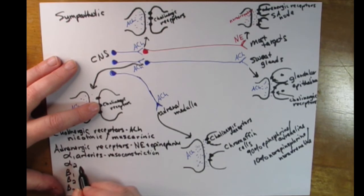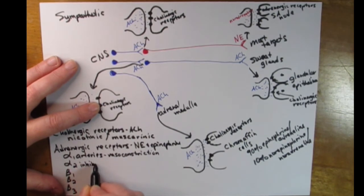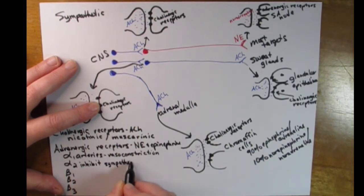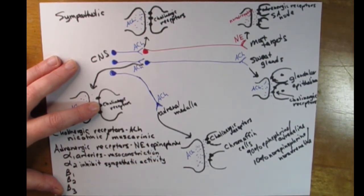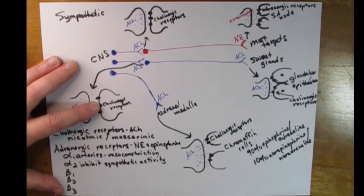Alpha-2 adrenergic receptors do the opposite: they inhibit sympathetic activity in general. Specifically, they decrease vasomotor tone and therefore decrease blood pressure. There are classes of drugs that are agonists for the alpha-2 adrenergic receptors — an agonist mimics the binding of a neurotransmitter to that receptor — and this class of drugs will decrease blood pressure in people who may have issues with blood pressure.